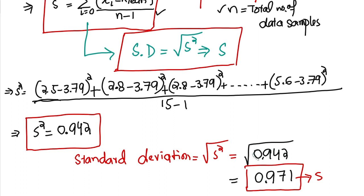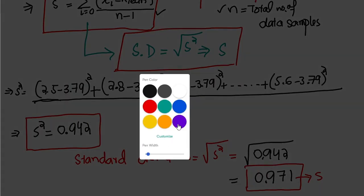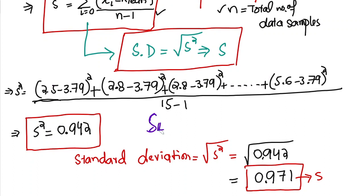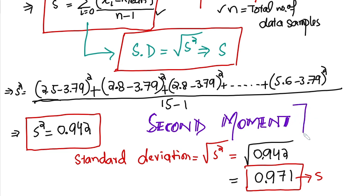So that is how we find the value of the variance and the standard deviation. This is called the second moment — the first moment is the mean and the second moment is the variance. That's it for today, in which we found the variance and standard deviation for the data points given in problem 1.7. I will see you with more interesting questions in our upcoming video — take care of yourself and I will see you soon.